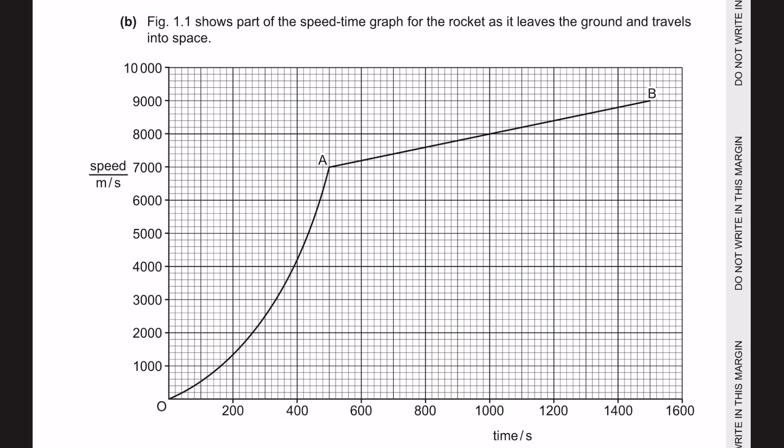Next question B. Figure 1.1 shows the part of the speed time graph for the rocket as it leaves the ground and travels into the space. Remember that the gradient of a speed time graph represents the acceleration, and the area under the line can tell you the distance traveled of the object. As we can see here from O to A, we do not have a straight line, as it is from A to B. A straight line means that the gradient is constant, and we have learned that gradient means acceleration. So constant gradient means constant acceleration.